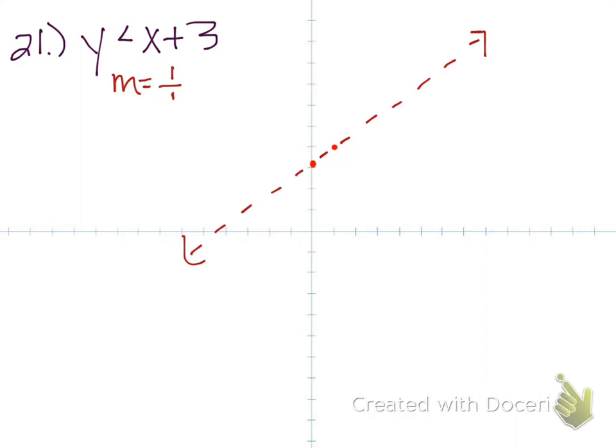It's like before when we were doing brackets and parenthesis. We would do parenthesis if it wasn't equal to. How do we show like a parenthesis on a line? We do dashed. If it's less than or equal to, we would have done a solid line. So because it's open, it's a dashed line.